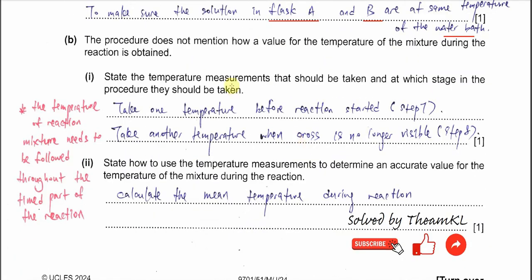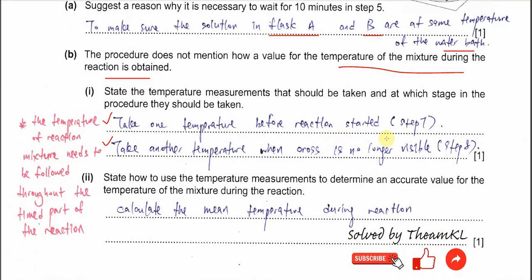Part B: the procedure does not mention how the temperature of the mixture during the reaction is obtained. Part B1: state the temperature measurements that should be taken. We take one temperature before the reaction starts — before mixing flasks A and B — and another temperature when the cross is no longer visible, i.e., when the timer stops. So we take two temperatures: at step 7 and step 8.